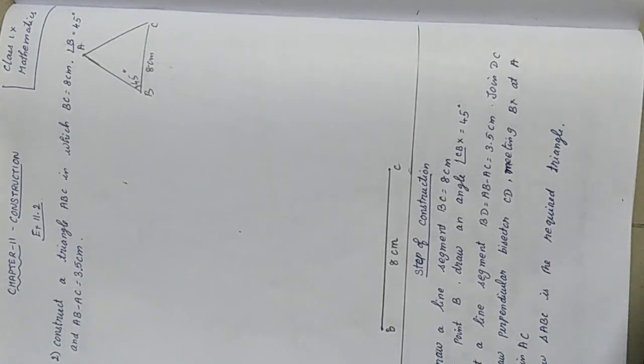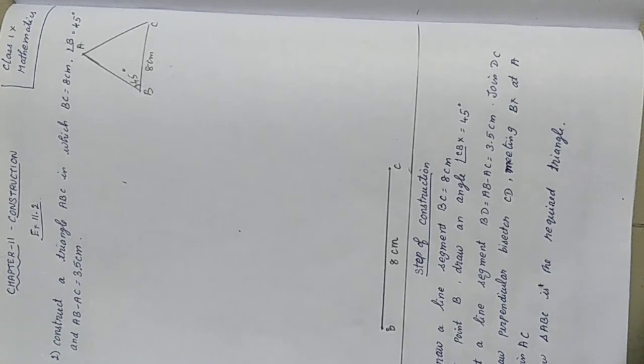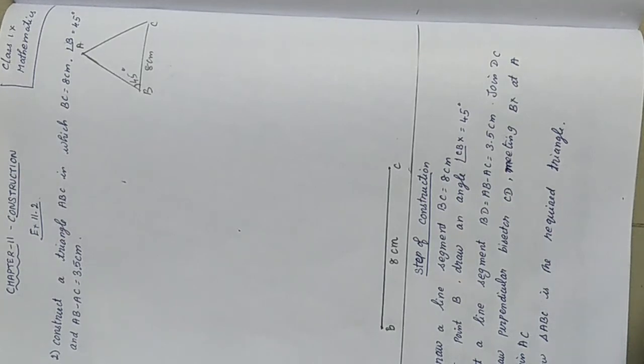Happy day children, in this video 2 let us see the second question of exercise 11.2. Construct a triangle ABC in which BC is 8 cm, angle B is 45 degrees, and the difference between two sides, that is AB minus AC, is 3.5 cm.